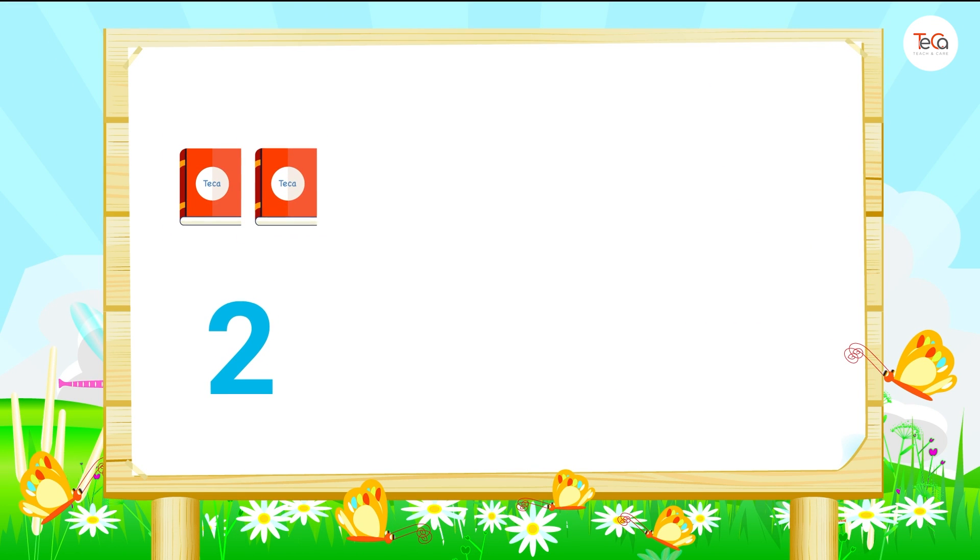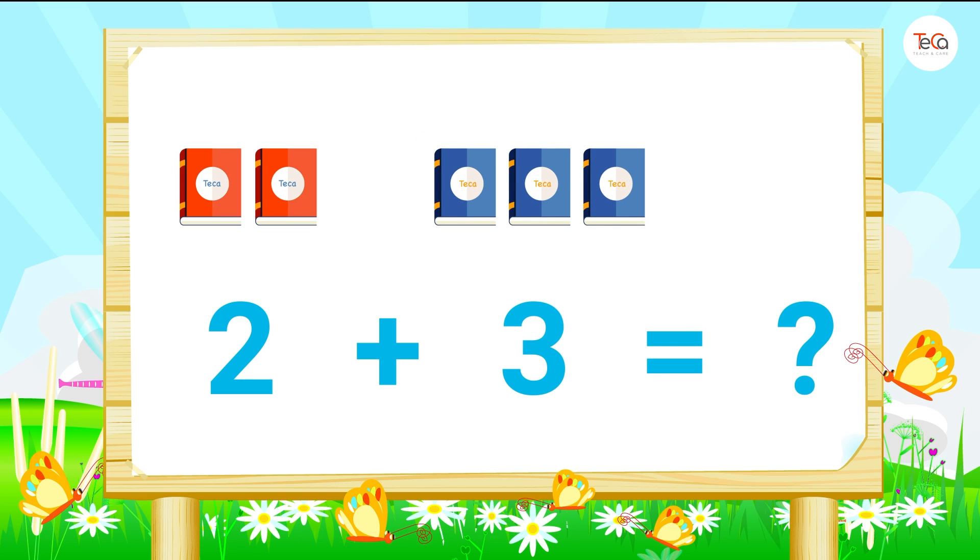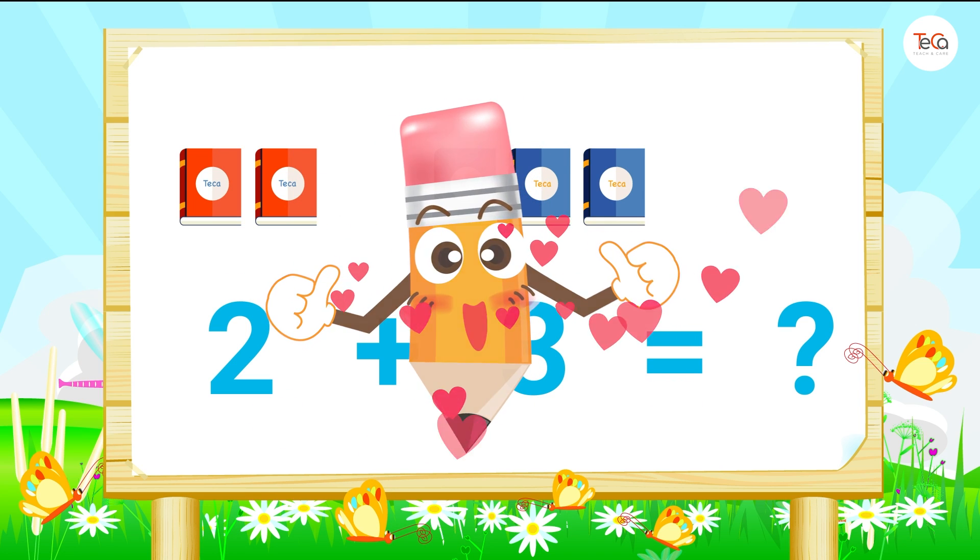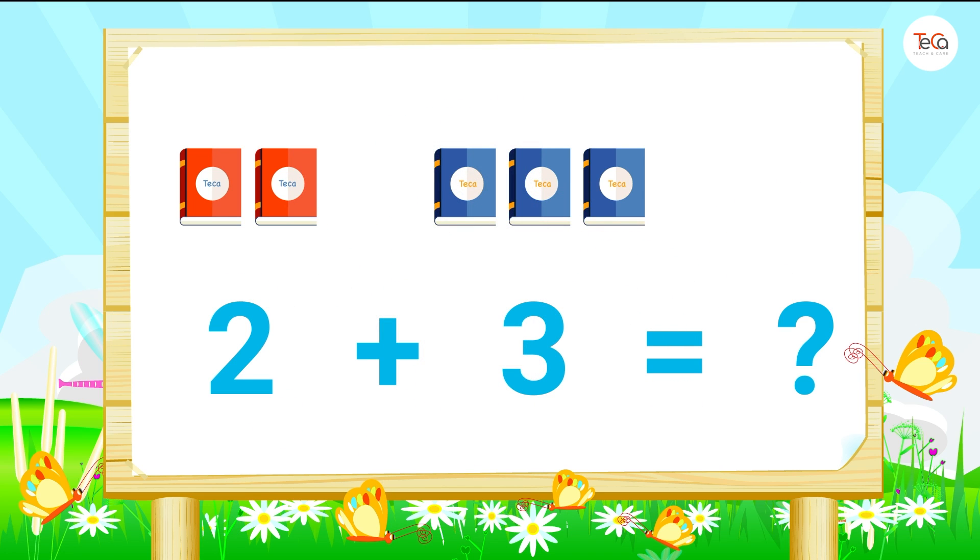Two books plus three books equals... very good. Here we have one, two, three, four, five books. So, two plus three equals five.